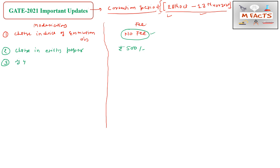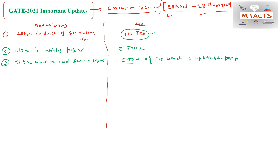If you want to add one more paper — a second paper — that you did not add earlier, you will be charged 500 rupees plus the fees applicable per paper according to your category. For example, if you are from the General category, 1500 rupees will be charged per paper, so with the 500 rupee addition, the total will be 2000 rupees.